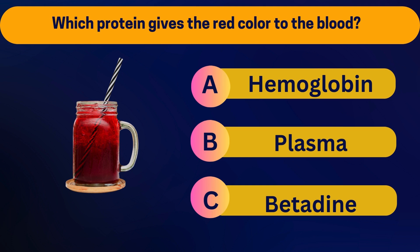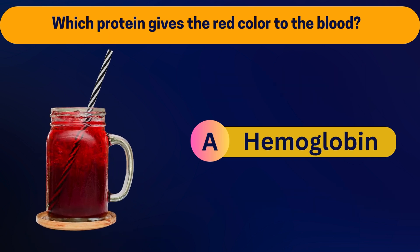Which protein gives the red color to the blood? Hemoglobin, plasma, or betadine? Hemoglobin.